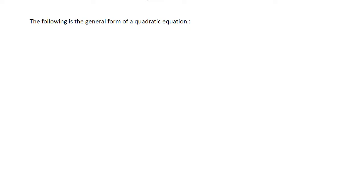The following is the general form of a quadratic equation: ax² + bx + c = 0, where a does not equal 0.